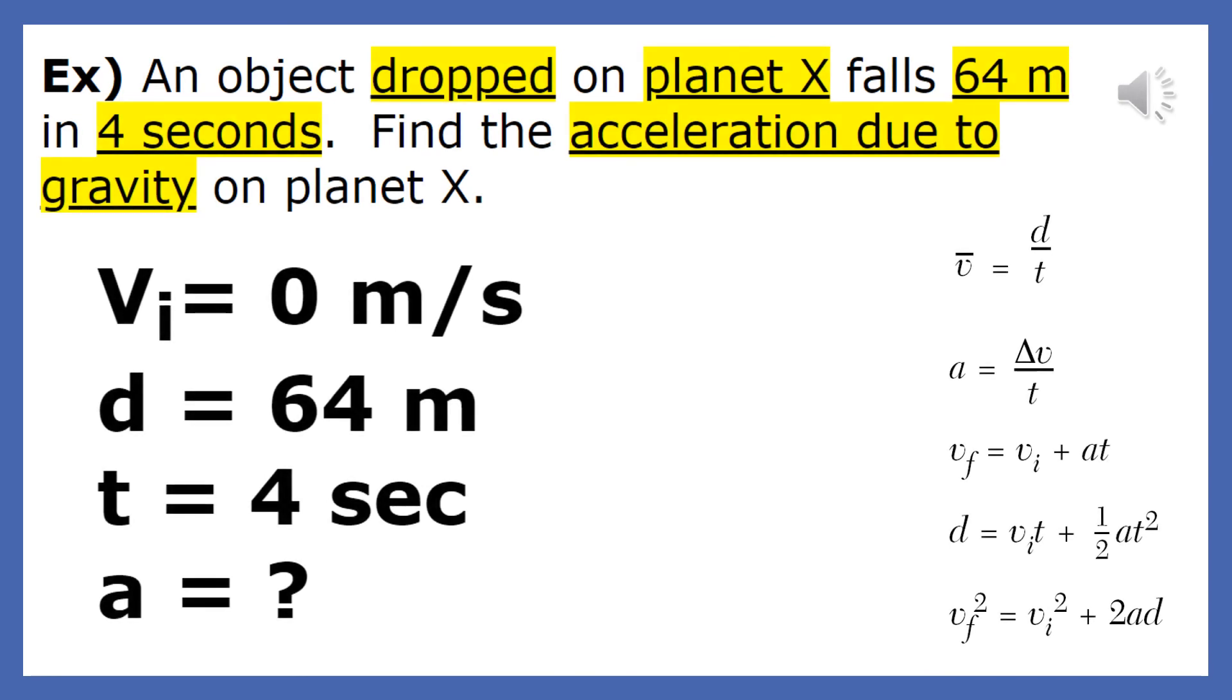Step 1 is to underline all the important words and numbers that will help us find an equation. Since we see the word drop, we know that the initial velocity is zero. When we scan the equation sheet to find one that matches the four variables that we have, we see that the fourth equation fits.